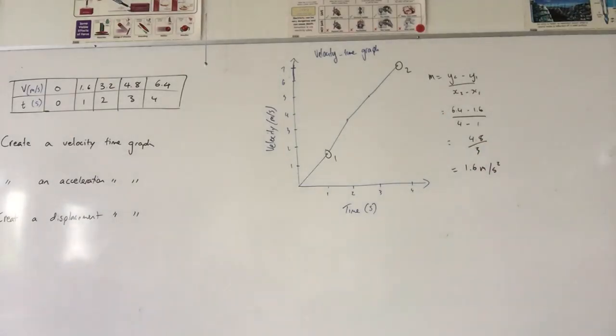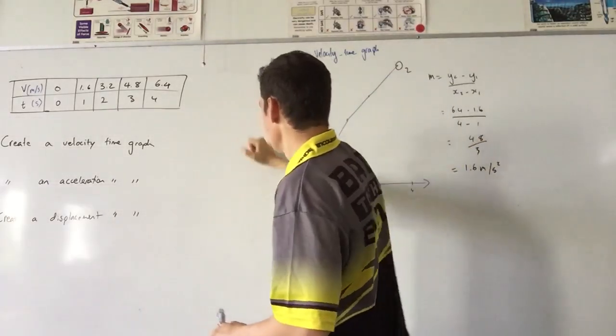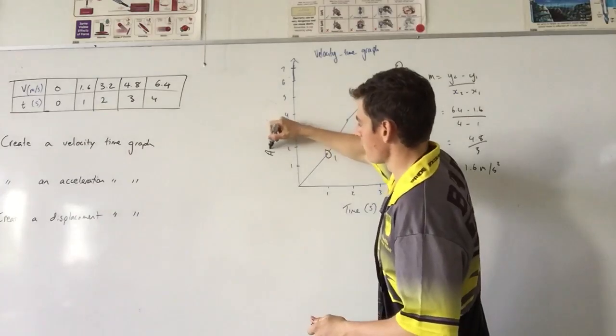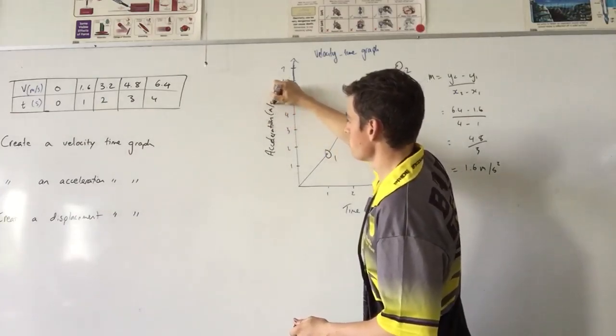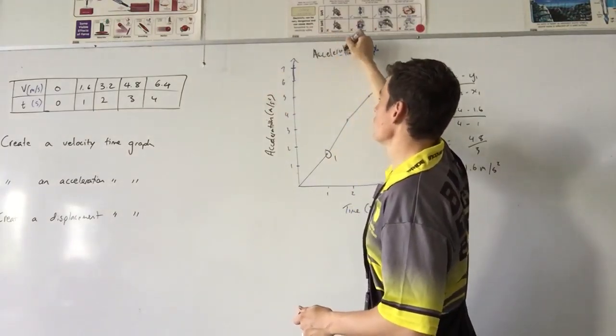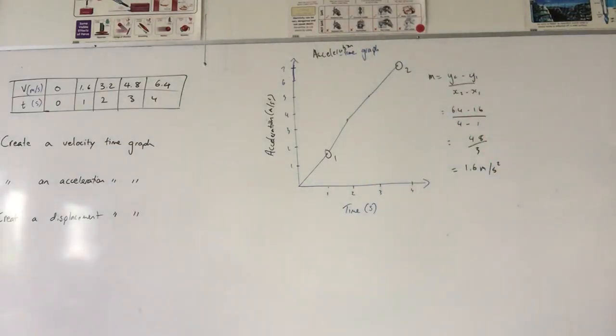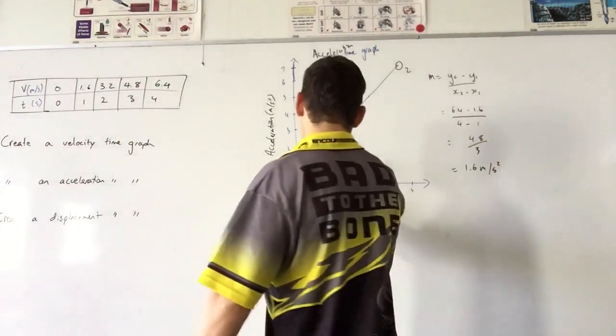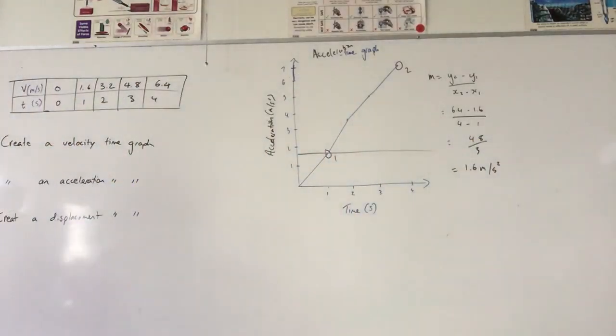So my acceleration graph, I'm not going to redraw my graph because I'm extraordinarily lazy. What I'm going to do is rub out that and make this acceleration. Change my units to meters per second squared. I'm going to rub that word out and write acceleration. And this is where you do as I say, not as I do. And then I'm going to draw a straight line across there. Very good.